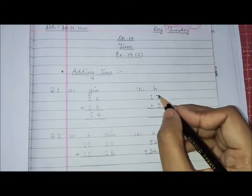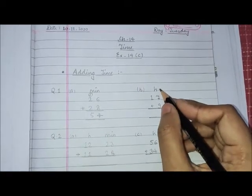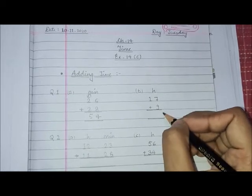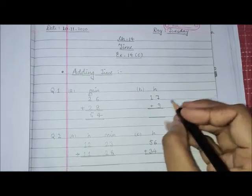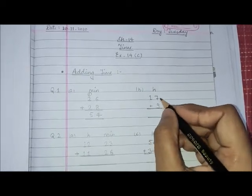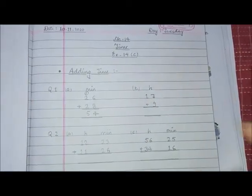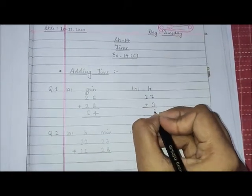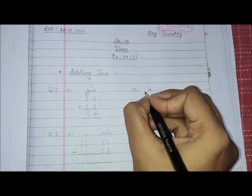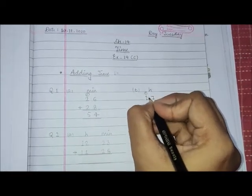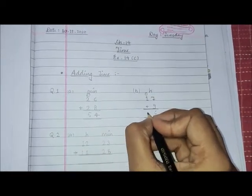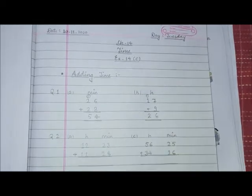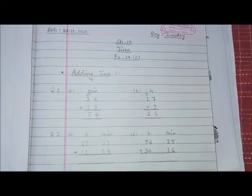In B part, hours are given, so we have to add hours. 9 plus 7 is 16, so 6 here, 1 carry. Then 1 plus 1 is 2. So 26 hours is the answer.